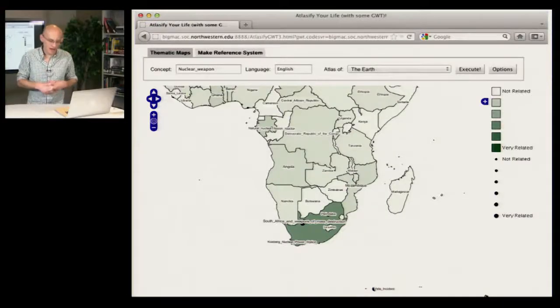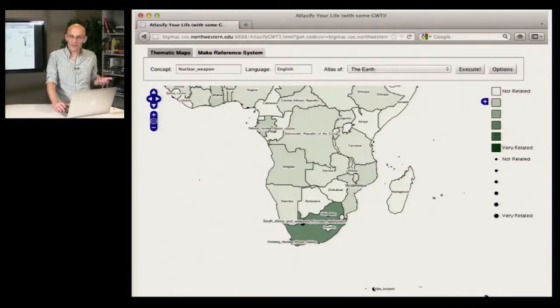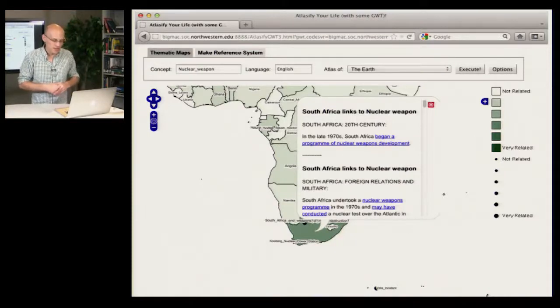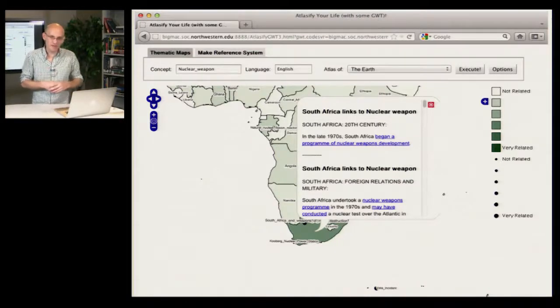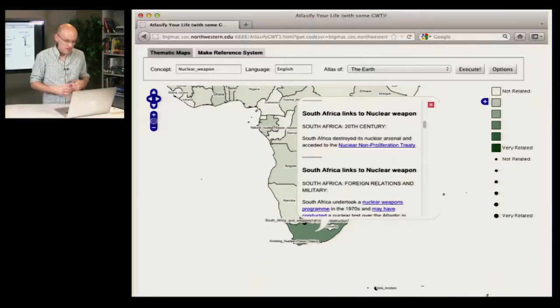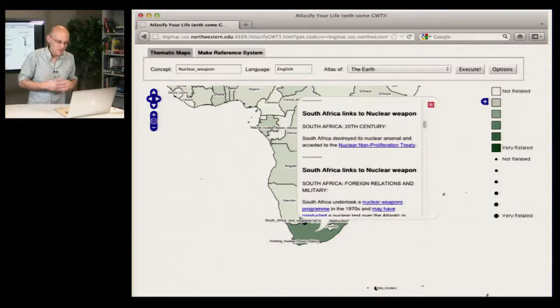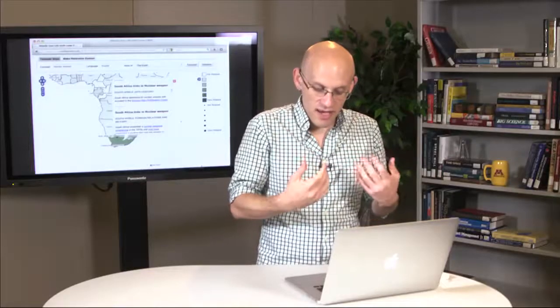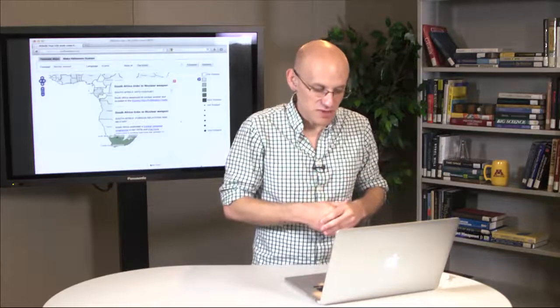So for example, if we move on over here to sub-Saharan Africa, let's say I'm curious about why South Africa is so related to nuclear weapons. Now in Atlasify, you can click on any geographic entity, and Atlasify is going to display a list of relationships between the clicked entity and the query concept in understandable natural language. This involves some natural language processing, which we'll briefly touch on at the end of this video. So here it's saying that South Africa began a nuclear weapons program in the late 70s, and moving down the list here, we find out that it later destroyed its arsenal and joined the nuclear non-proliferation treaty.